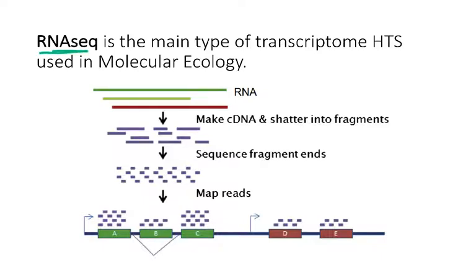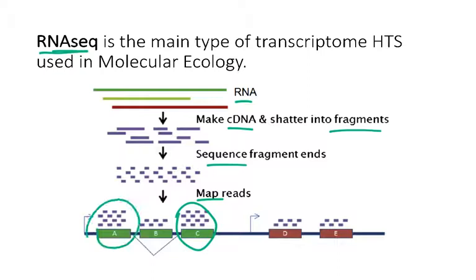What's illustrated in this graphic is that from the original RNA you extract, you can convert to cDNA, fragment it into short pieces, sequence those small reads, and then map those reads back to get estimates of expression level. In this example, certain regions are expressed more highly than others because they had greater numbers of reads mapping to them.